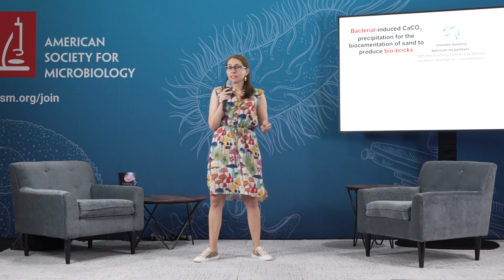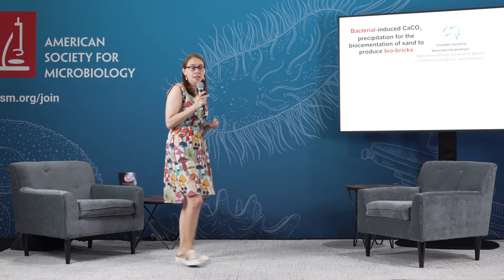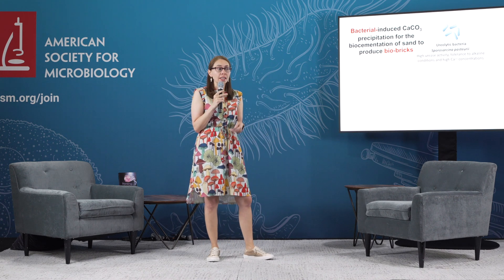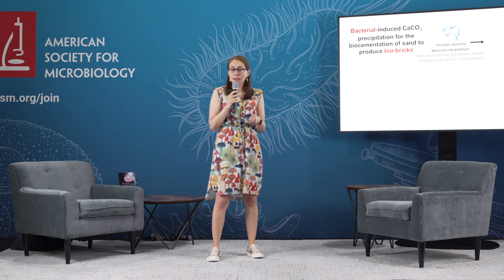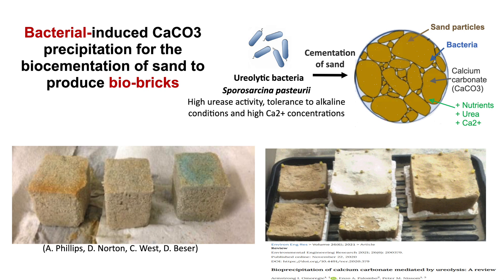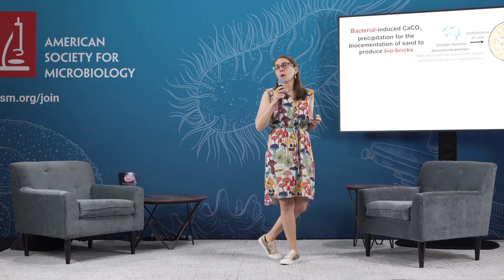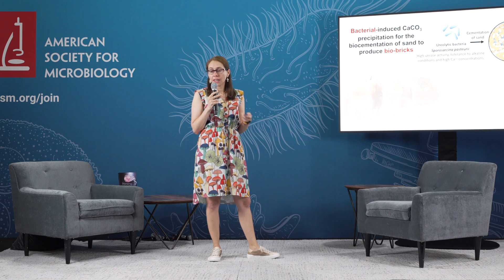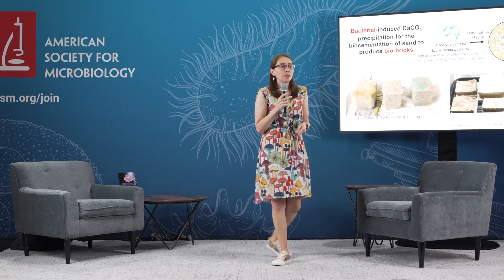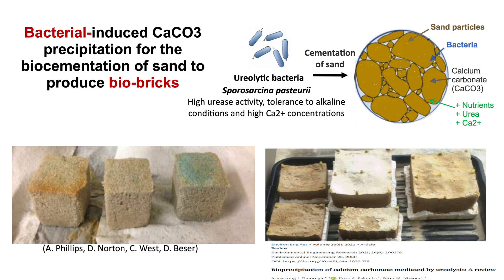This bacterium is known for its ability to produce urease at very high rates; it's very active, it can grow under alkaline conditions, and it can tolerate high concentrations of calcium. To create biobricks, we typically place sand particles into a mold, then add a suspension containing microbial cells, along with nutrients and a mineralizing solution containing calcium ions and urea. As a result, we obtain calcium carbonate precipitates — and these precipitates act like cement, holding all the sand particles together. After drying and curing, we end up with robust building blocks. Some of these materials actually have similar properties to bricks prepared using traditional methods.